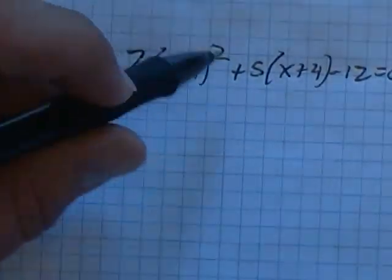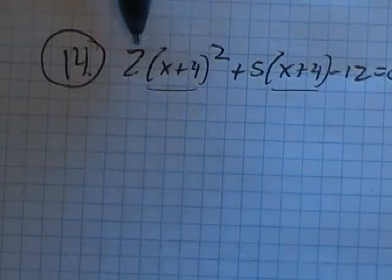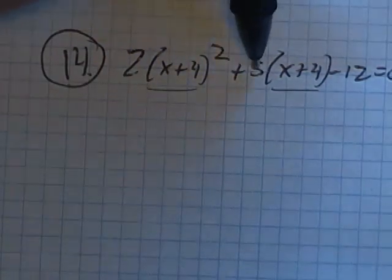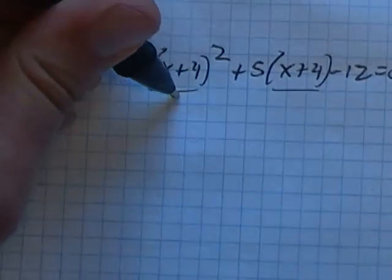I think it's a little more work than noticing that this is in quadratic form. I have something here and that same something squared. So two something squared plus five something minus 12 equals zero. I can take advantage of that.